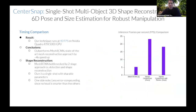We show our timing comparison where we achieve a 25 to 40 fps frame rate, which is fast enough for real-time applications — 4x faster than MeshR-CNN and around 10x faster than some other pose estimation approaches.